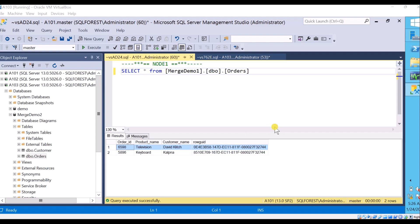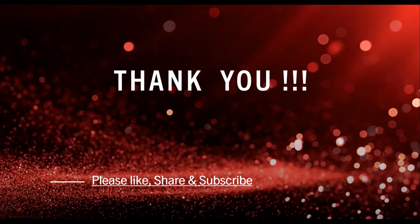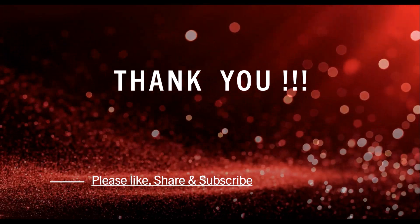What are the cases where we use merge replication? Use it when multiple subscribers need to update the same data at various times and propagate those changes to the publisher and other nodes; when a subscriber needs to receive data, make changes offline, and later synchronize with the publisher; when each subscriber requires a different partition of data; when conflicts might occur and you need the ability to detect and resolve them; or when the application requires net data change rather than access to intermediate states — for example, if a row changed five times at the subscriber before synchronizing, it will reflect as only one change at the publisher. I hope you enjoyed the video — thanks for watching, please like, share, and subscribe.